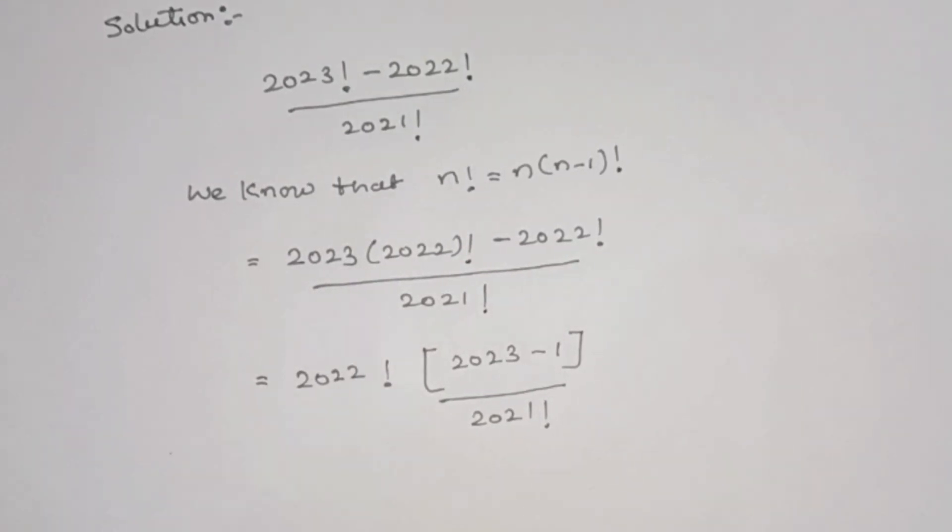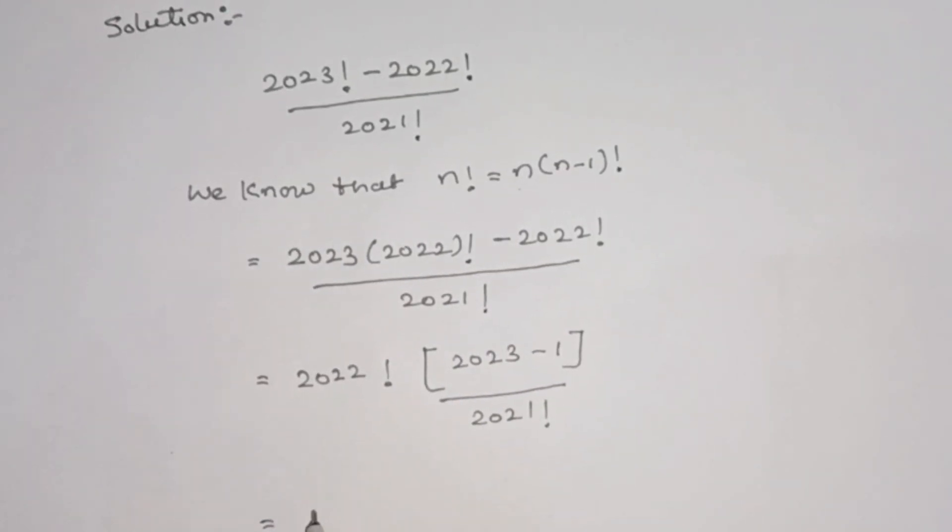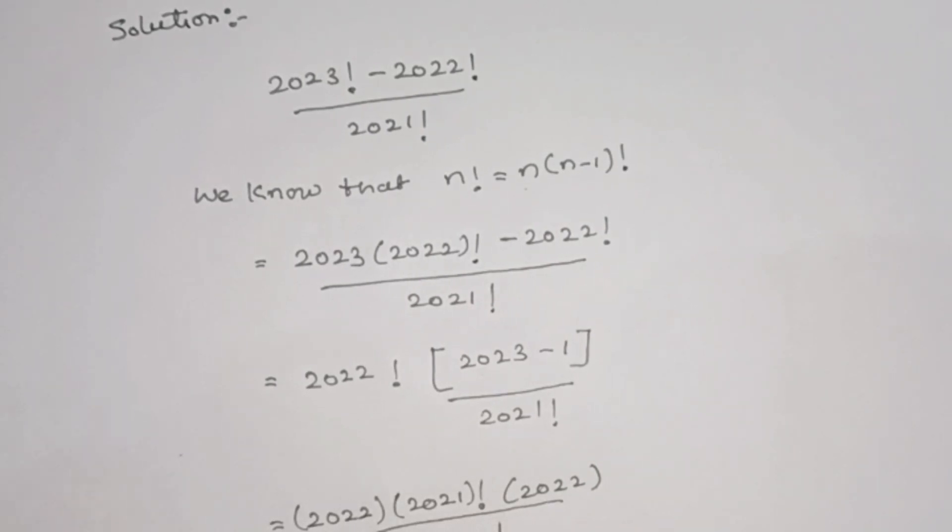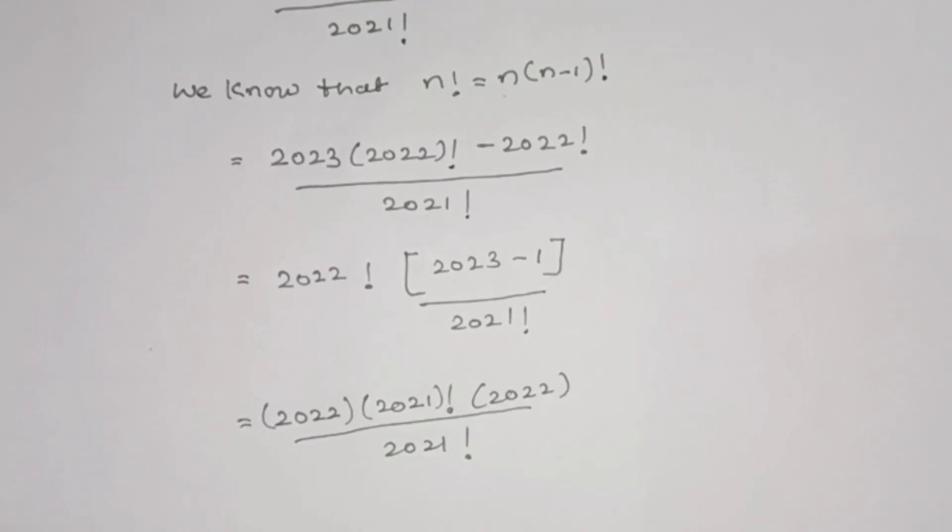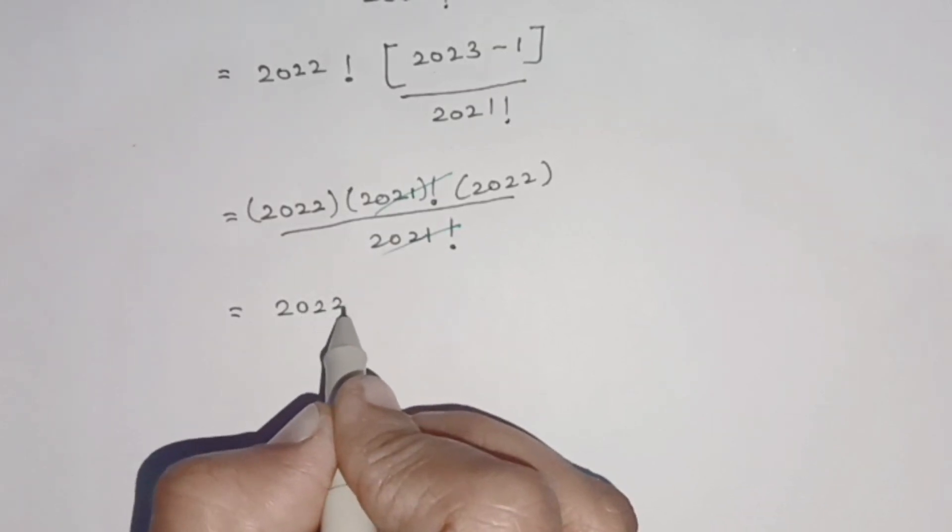Again, we can write 2022! as 2022 × 2021!. So we have (2022 × 2021! × 2022) / 2021!. The 2021! cancels out, so the remaining terms are 2022 × 2022.